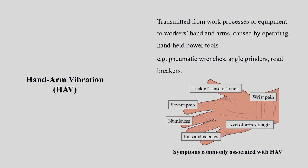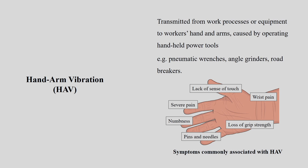Moving to vibration, two important concepts are hand-arm vibration and whole-body vibration. Hand-arm vibration is transmitted from work processes or equipment to workers' hands or arms, caused by operating any kind of hand-held powered tool. The symptoms include wrist pain, loss of grip, pins and needles sensation, numbness, severe pain, and lack of sense of touch. These are the common symptoms of hand-arm vibration.